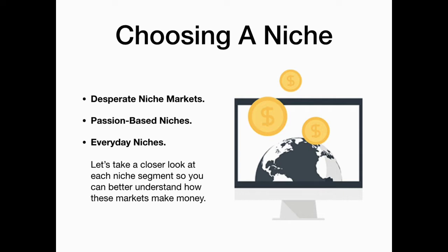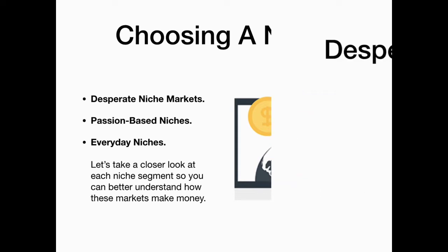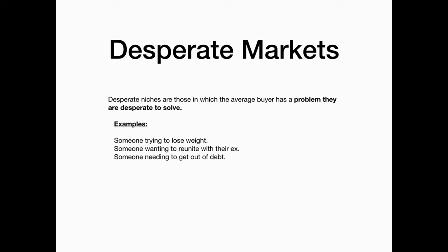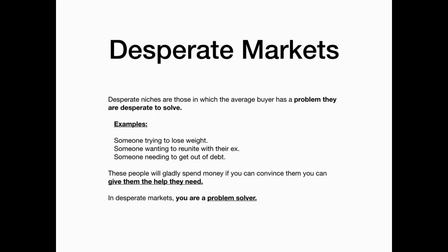Let's take a closer look at each niche segment so you can better understand how they may make you money. Desperate markets are niches that involve average buyers that have a problem they are desperate to solve. Examples would be someone trying to lose weight, get back with their ex, or get out of debt. These people would gladly spend money if you can convince them you can give them the help they need. In desperate markets, you are a problem solver.